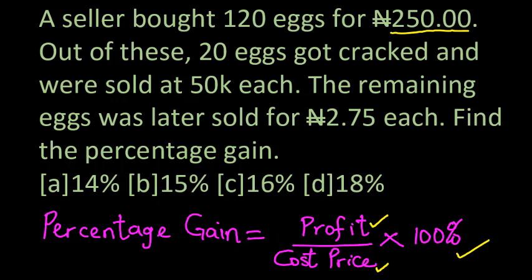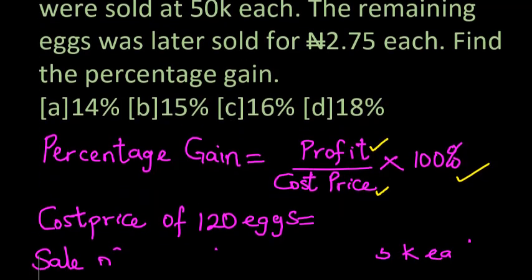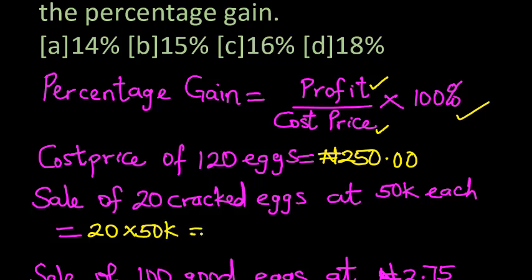The selling price also has to be determined. Let's get started. The cost price of 120 eggs is 250 naira, as we have seen in the question above. Then the sale of 20 cracked eggs at 50 kobo each, that is 20 eggs times 50 kobo, which will give us 1,000 kobo. And 1,000 kobo is equivalent to 10 naira.